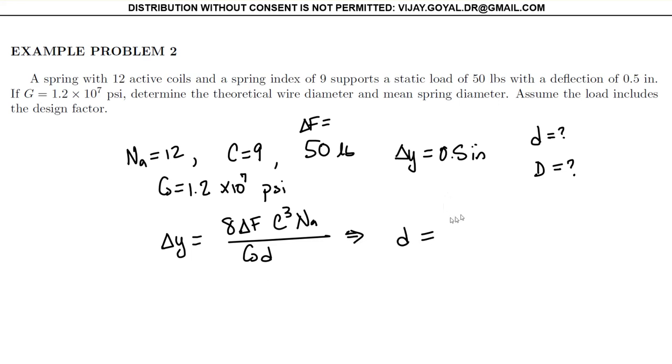From here I can solve for d, and your d is equal to 8 times delta F C cubed N_A over G delta y. And if I plug in all the numbers here you find 8 times 50, this is 9 cubed, this is 12, this is 1.2 times 10 to the 7.